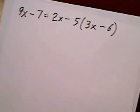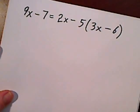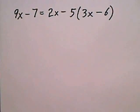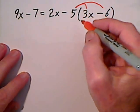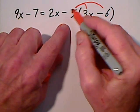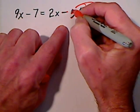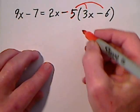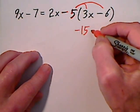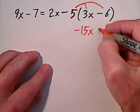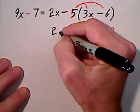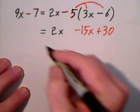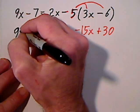Next one. Again you'll have to get rid of your parentheses. Send in the 5 — this is actually a negative 5. So you're sending in negative 5 to each term. Negative 5 times 3 is negative 15. Negative 5 times negative 6 is positive 30. We'll bring down whatever we haven't touched — this 2x. We have our negative 7 and 9x as well.